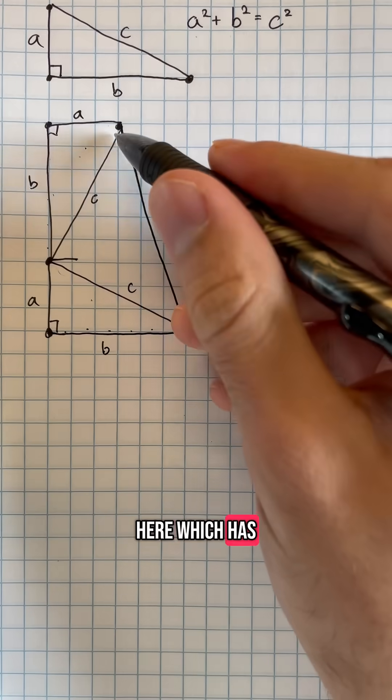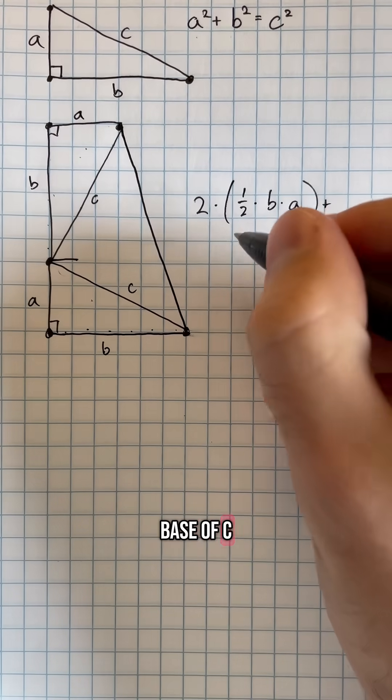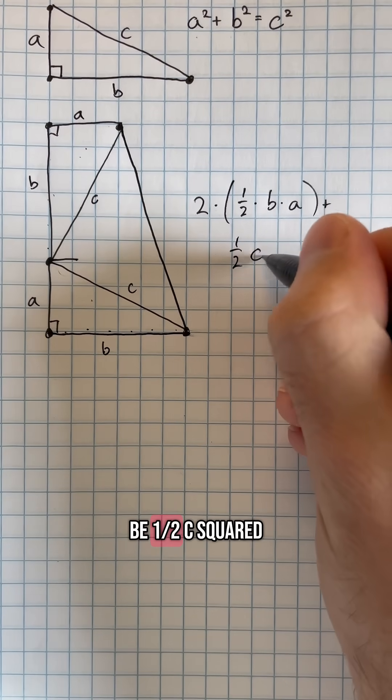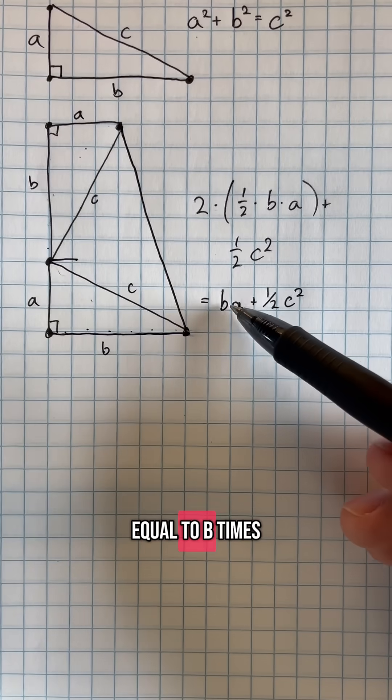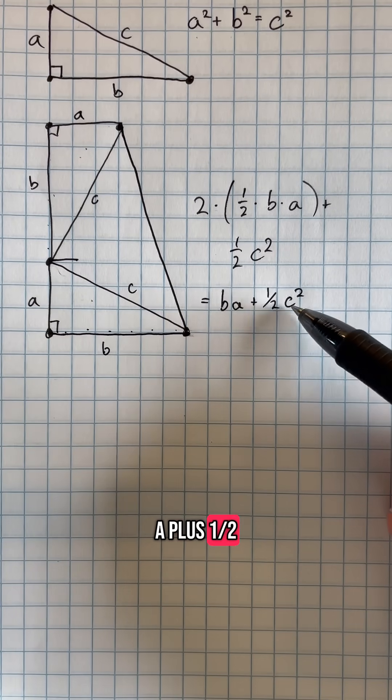plus this triangle here, which has a height of c and a base of c. So this would be one half c². Simplifying this out, we see that the area of this shape is equal to ba + ½c².